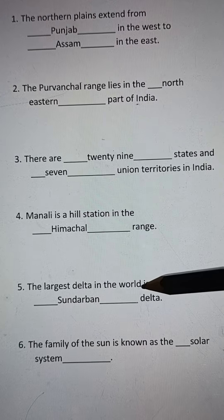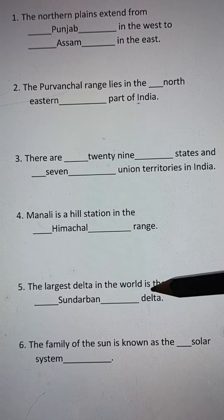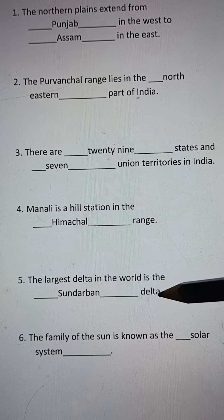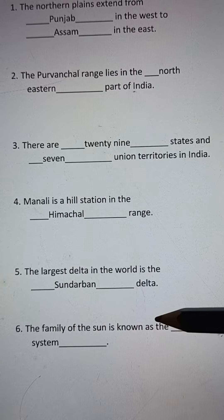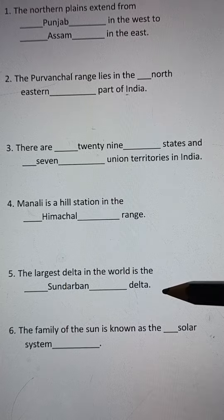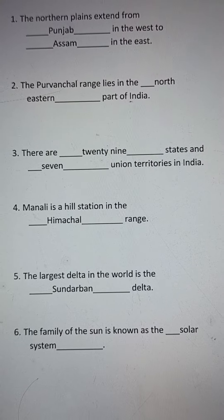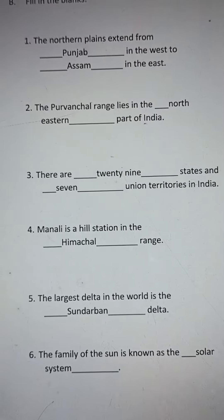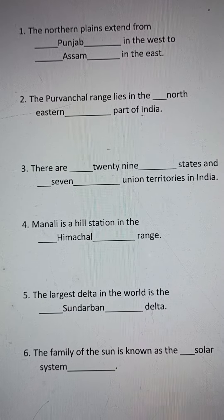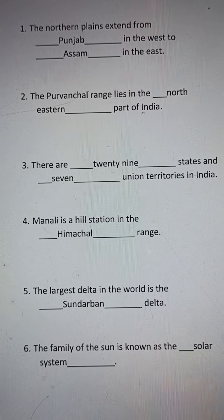Number five: the largest delta in the world is the Sundarban Delta. Number six: the family of the Sun is known as the Solar System. Try to read and learn these fill-in-the-blanks properly, with both the question and the answer.